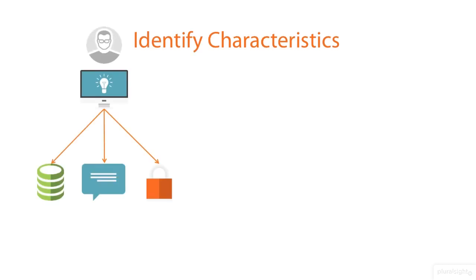Once we've discovered hosts on the network and their services, we need to know more about those systems and services. Here we are interested in unique characteristics each system possesses. The first characteristic I always like to know is the operating system — is it Unix, Windows, or something else? We also want to know what version of the operating system: is it something very old and likely unpatched, or something more recent? Nmap uses TCP stack fingerprinting to determine the operating system type and version of the target system. It does this by sending a series of packets and examining their responses. Using a database of more than 2,600 known systems, it can accurately determine the operating system and version of the target in most cases.